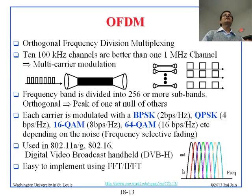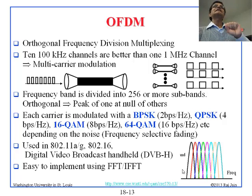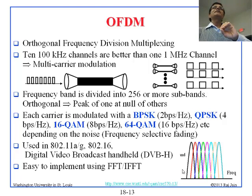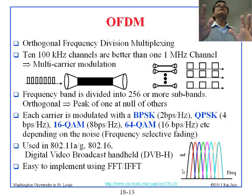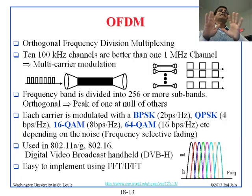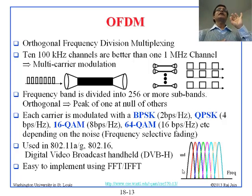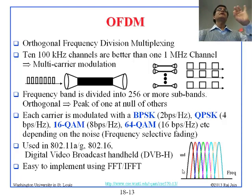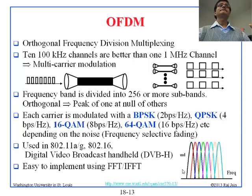The latest thing in modulation is called OFDM. This is latest in the sense that about 10 years ago it became so popular that everything done in the last 10 years is based on OFDM. If you get DSL today, it is OFDM. If you get WiMAX today, it is OFDM. If you get LTE today — 4G — it is OFDM. Anything you do in modulation is OFDM.